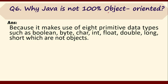Question number six: why is Java not 100% object-oriented? Java is object-oriented, but it is not 100% object-oriented. The reason is that Java uses primitive data types such as boolean, byte, char, int, float, long, and double — and these are not objects. Hence we cannot say Java is 100% object-oriented.